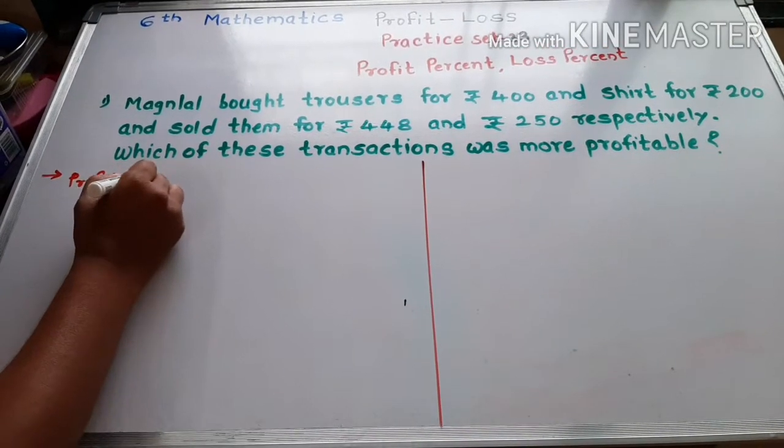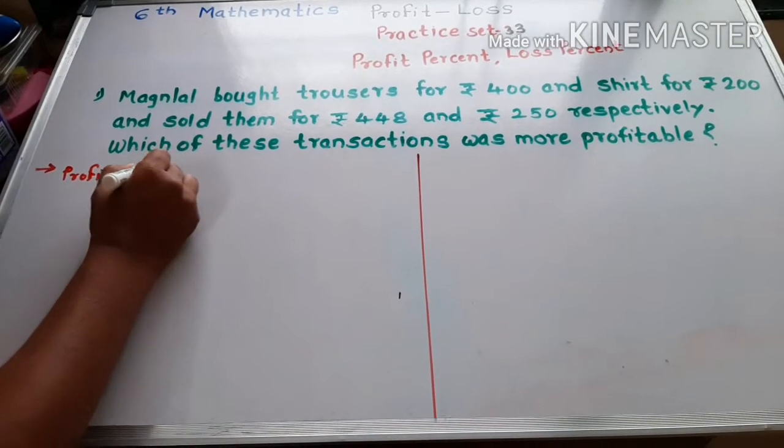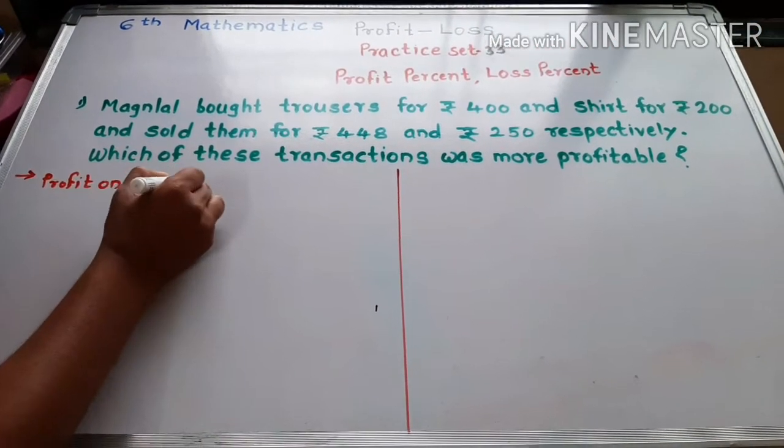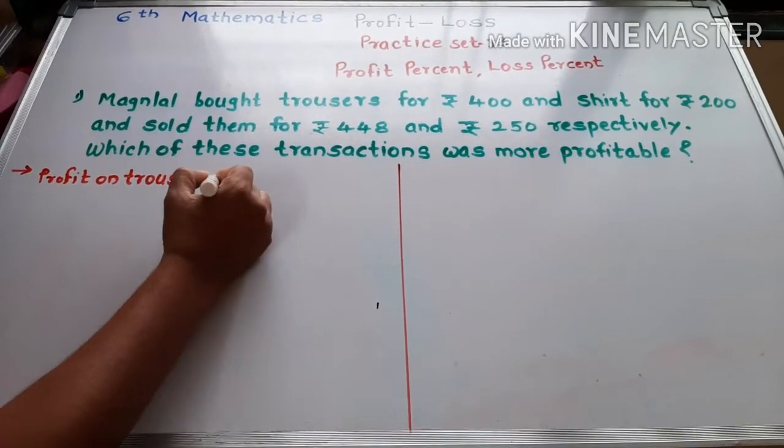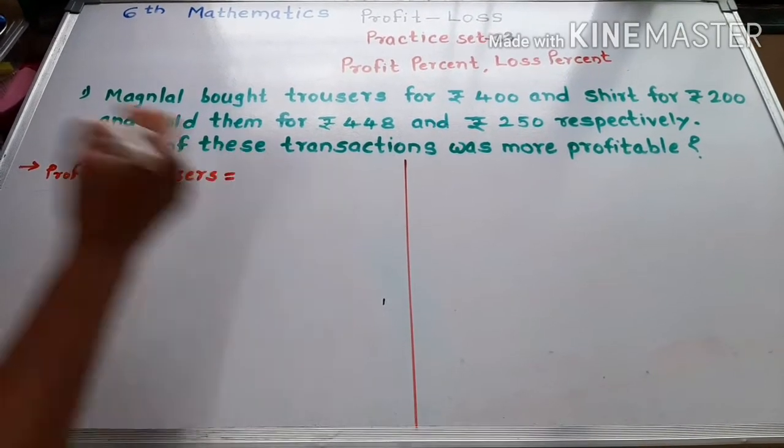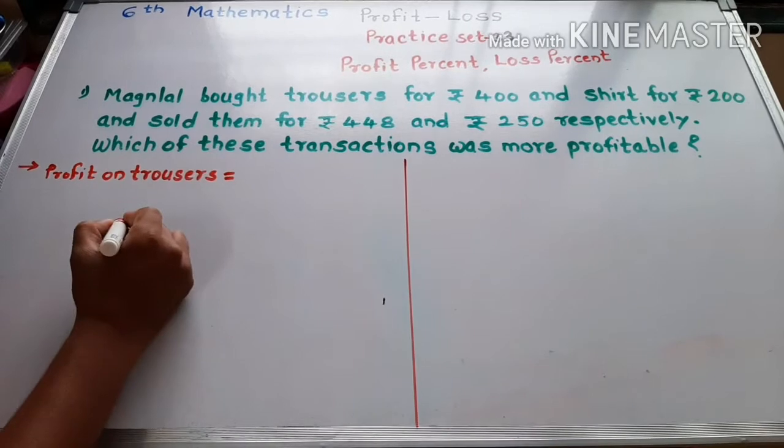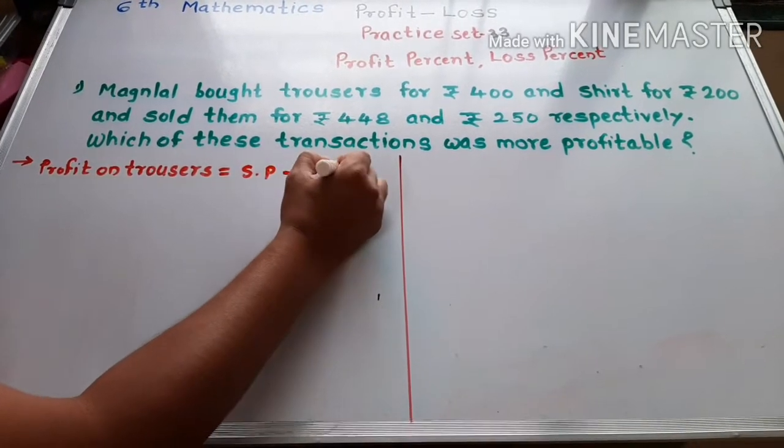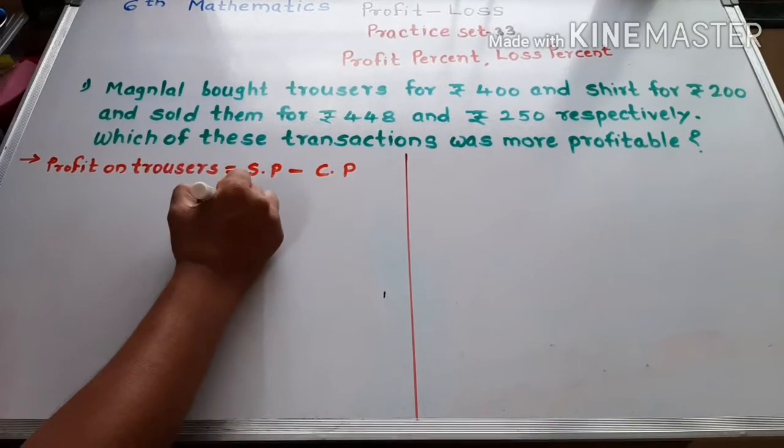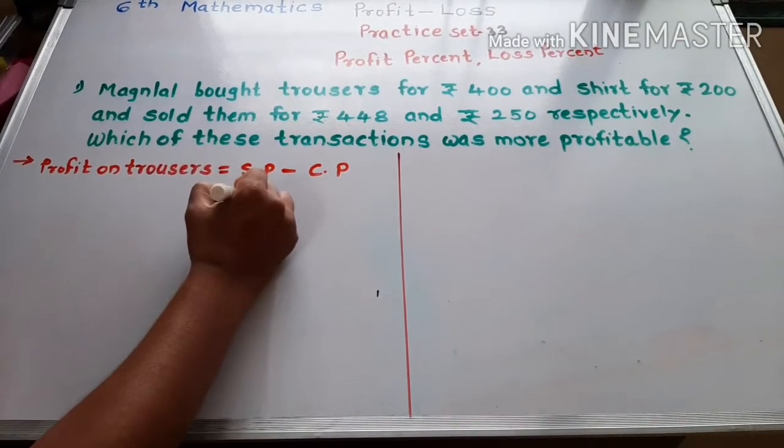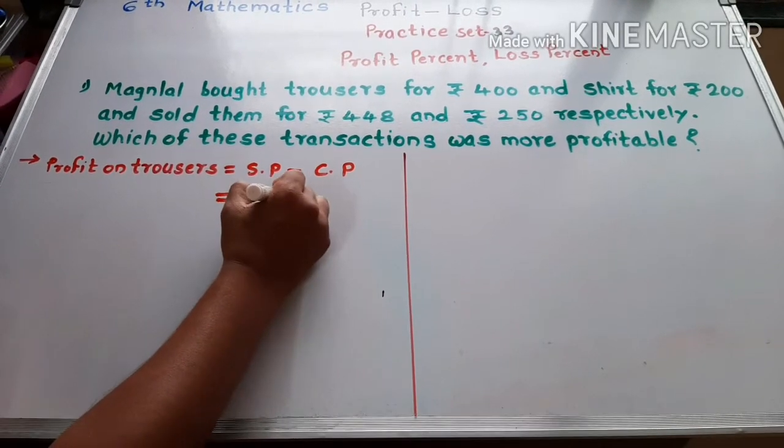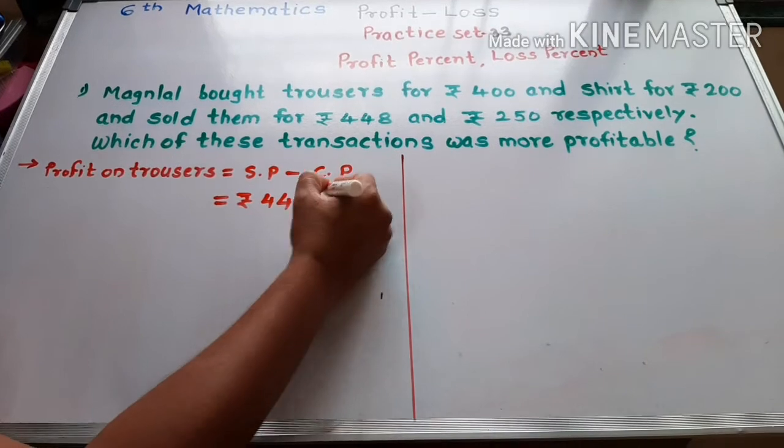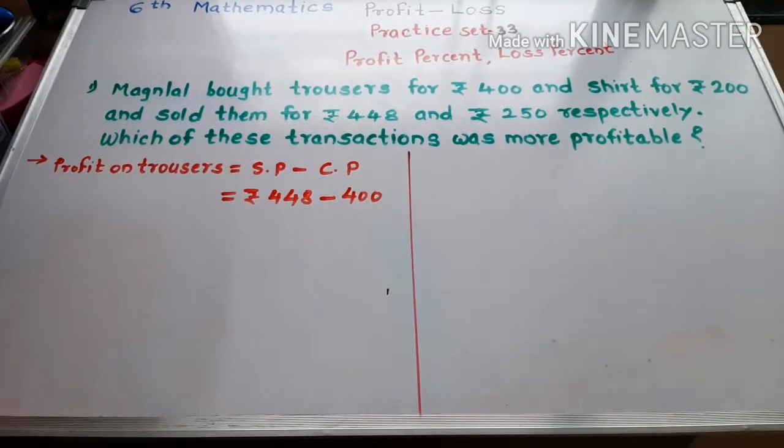Profit on trousers is equal to... This is the formula, selling price minus cost price. Now, selling price is Rs. 448 and cost price is Rs. 400.